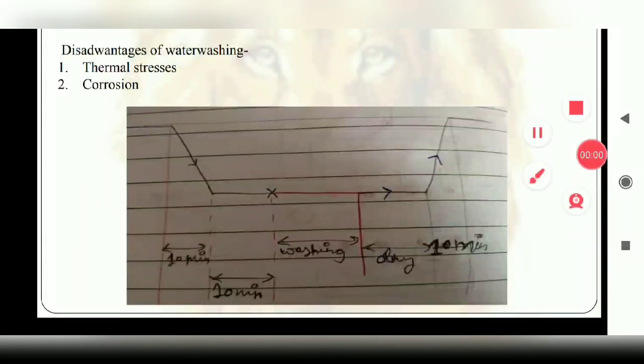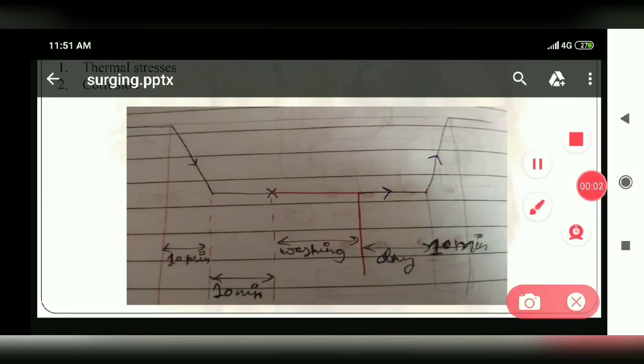You can see the graph here. So, first of all, you have low load decreased for at least 10 minutes. Slowly, slowly. Then, you have low load on the ship. Then, you have started the water washing from here. So, take your time.